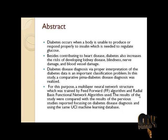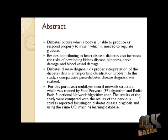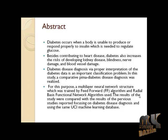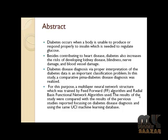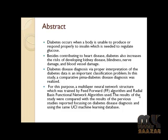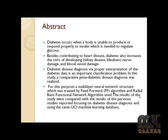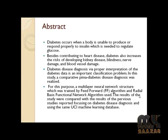Diabetes occurs when the body is unable to produce or to respond properly to insulin, which is needed to reduce glucose. To find out the level of the patient according to diabetes, there are six main features: age, time, body mass, pressure, plasma, pre-degree, and heat room.